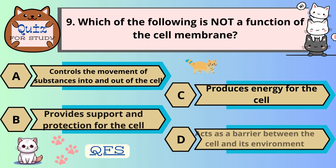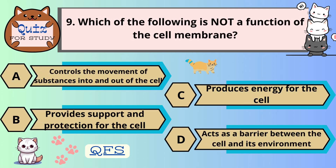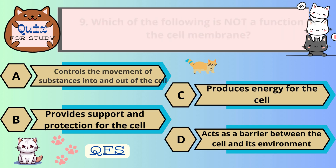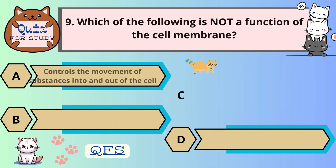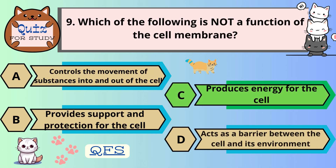Number 9. Which of the following is not a function of the cell membrane? The correct answer is C. Produces energy for the cell.